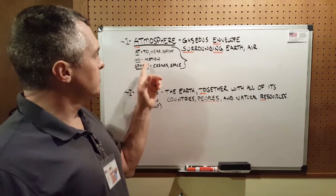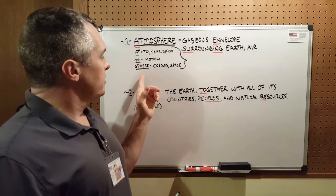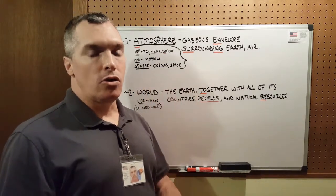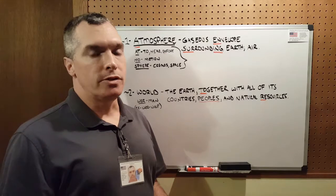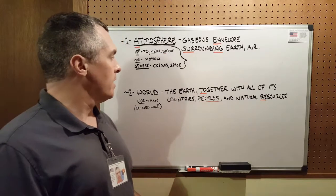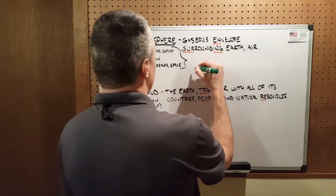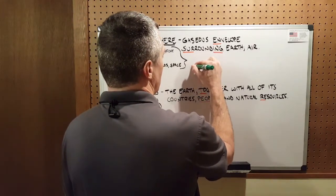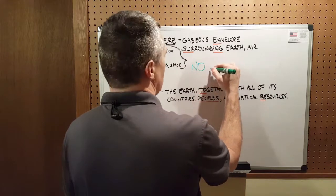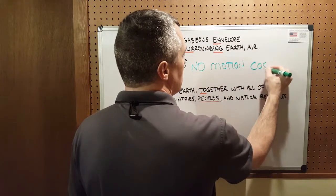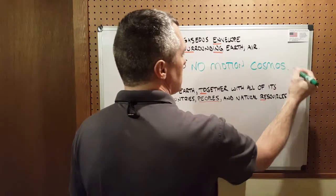Second syllable 'm' means motion, and the third syllable 'sphere' means cosmos space, which is the earliest etymological definition that I could find. So atmosphere really means no motion cosmos.